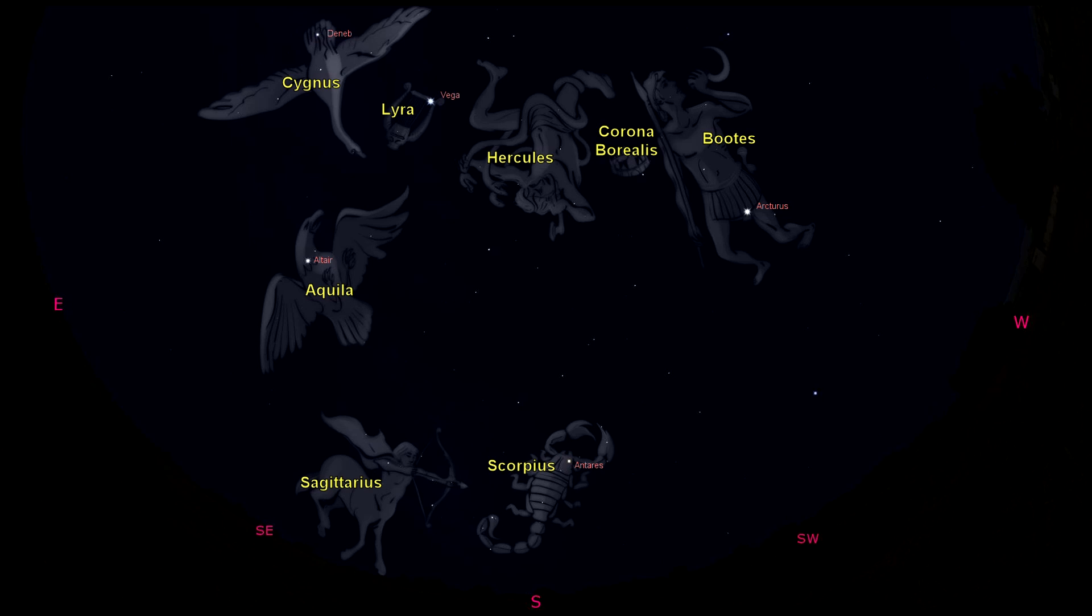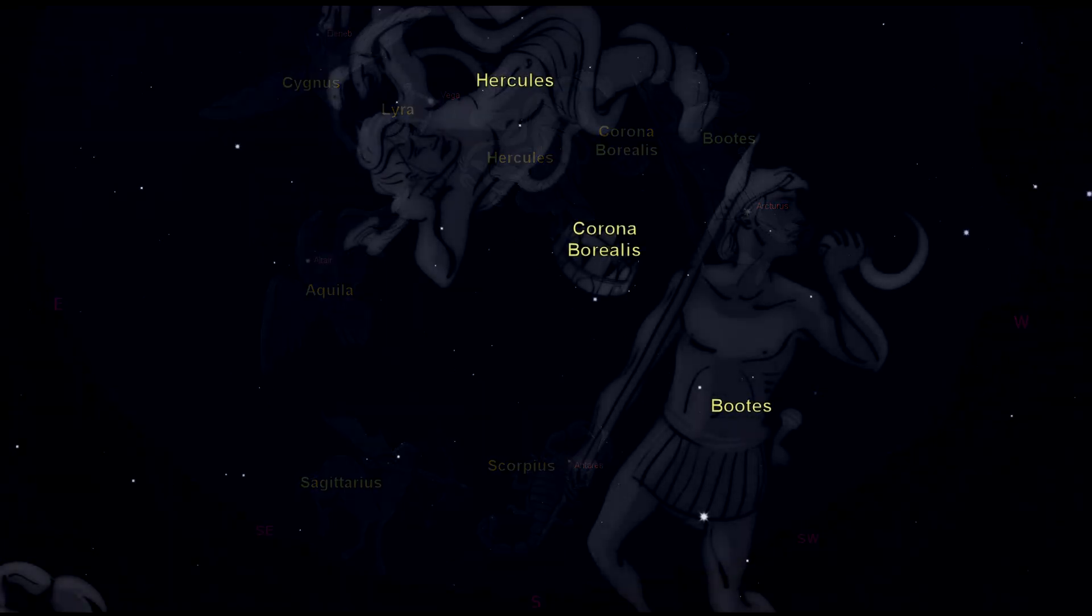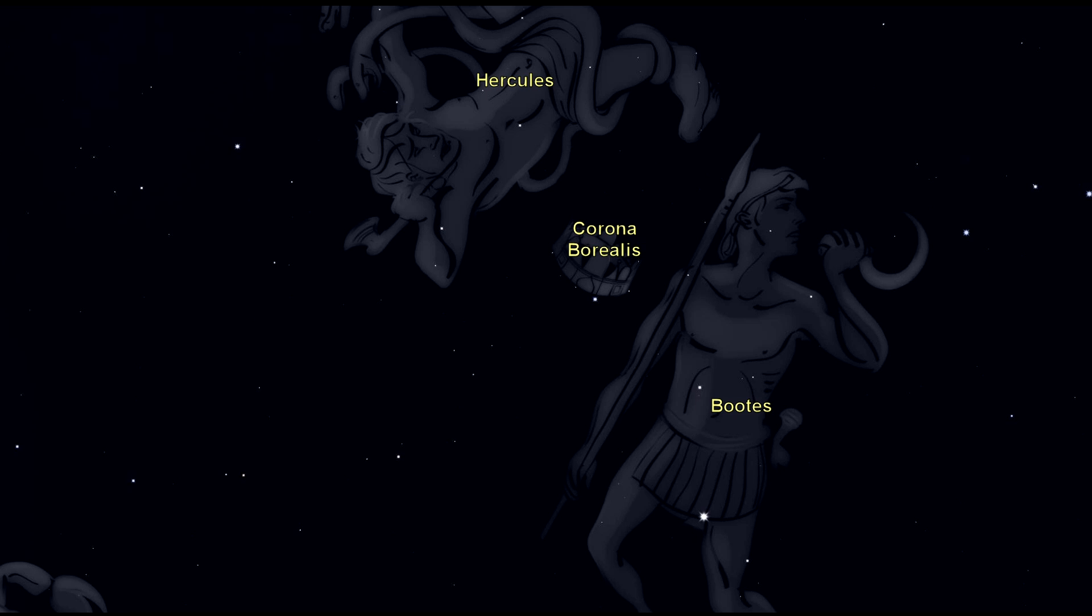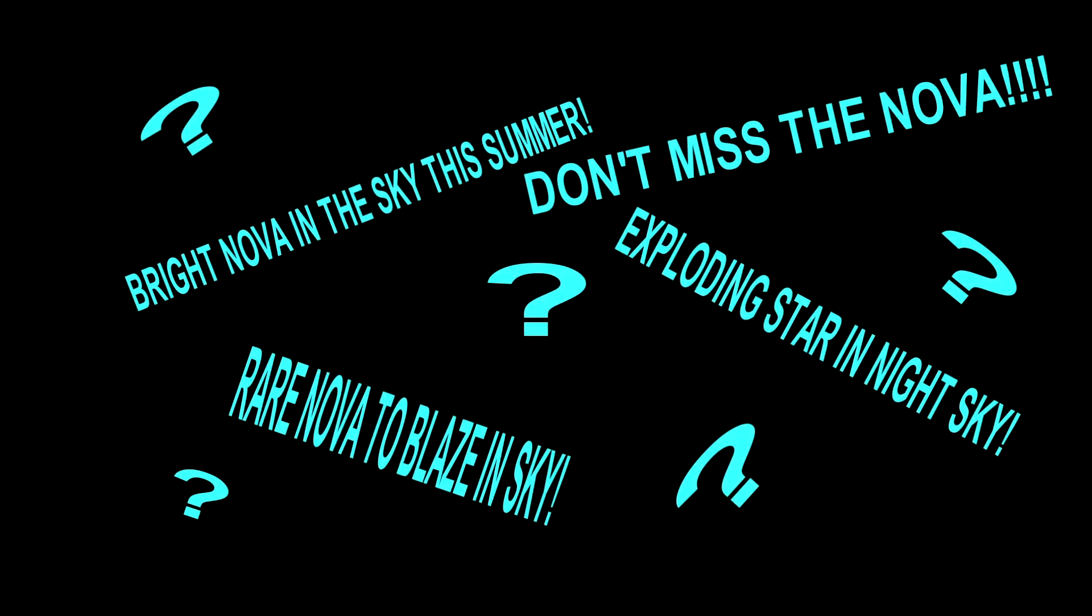Now going back to the constellation Corona Borealis up high in the western part of the sky next to Bootes, we have an interesting story that's been getting some press this summer, and you may have seen these stories about a nova appearing in the sky this summer. Some of them are quite exaggerated. However, beware of these exaggerated stories online about a bright new star appearing in the night sky this summer.